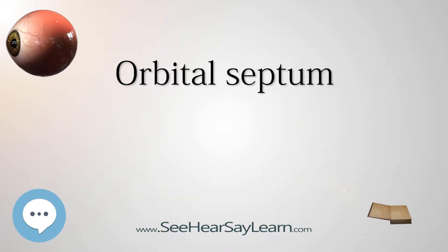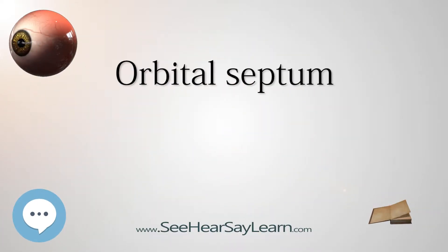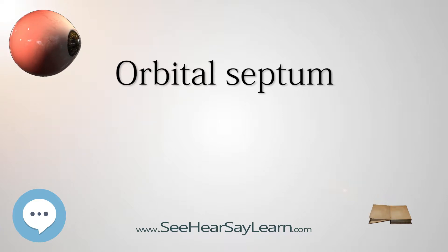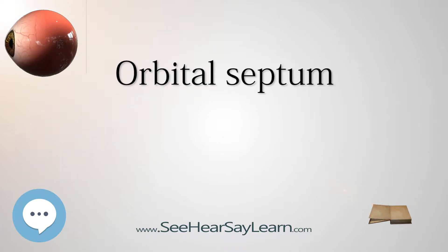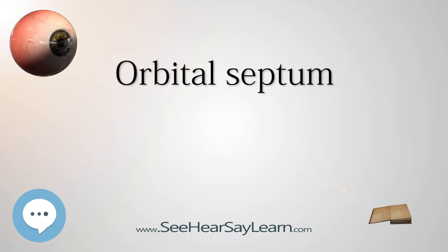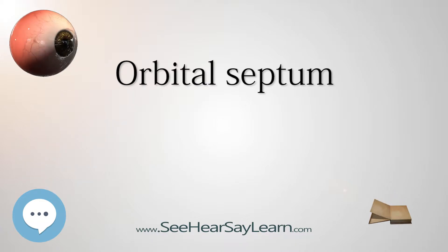The orbital septum, or palpebral fascia, is a membranous sheet that acts as the anterior boundary of the orbit. It extends from the orbital rims to the eyelids and forms the fibrous portion of the eyelids.